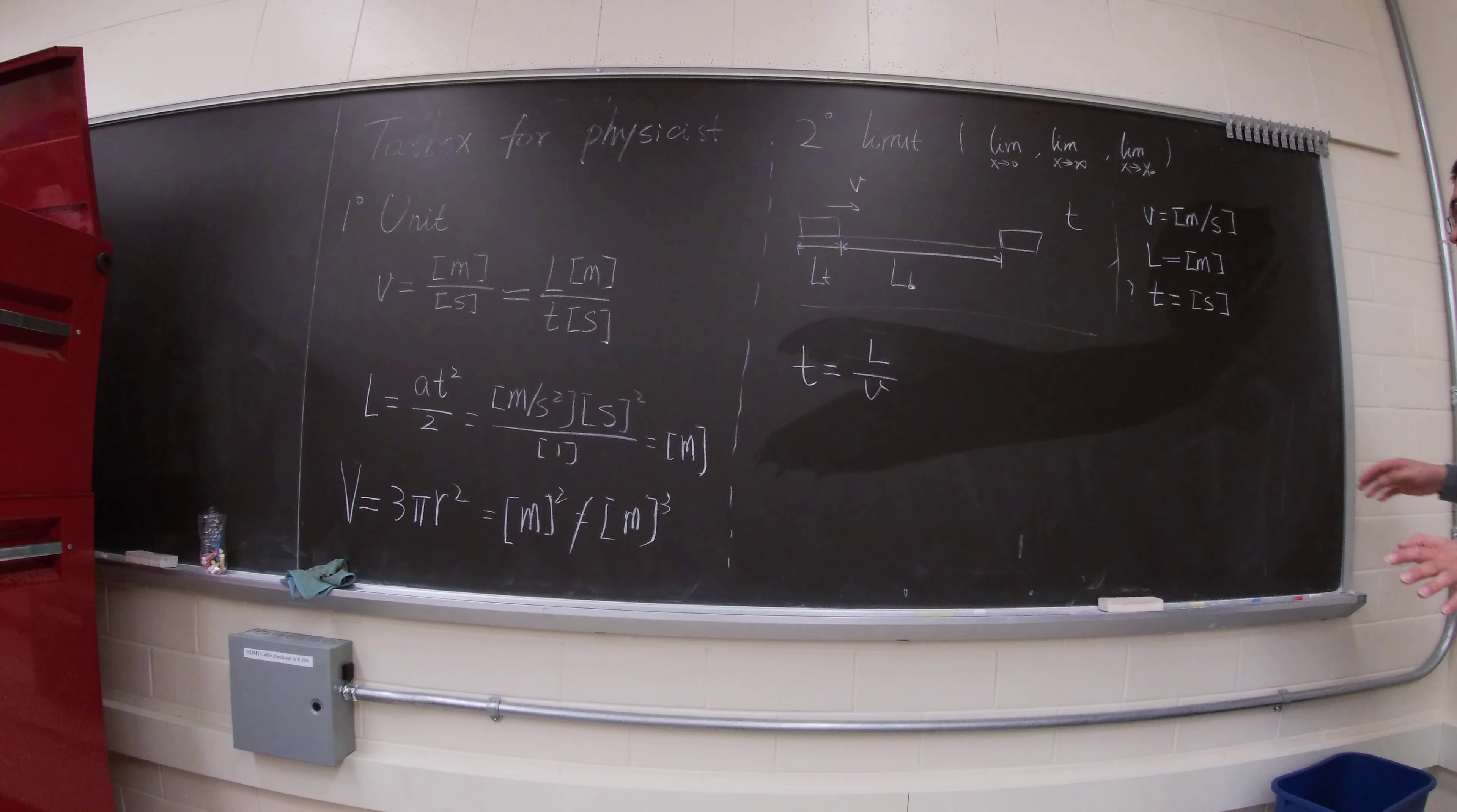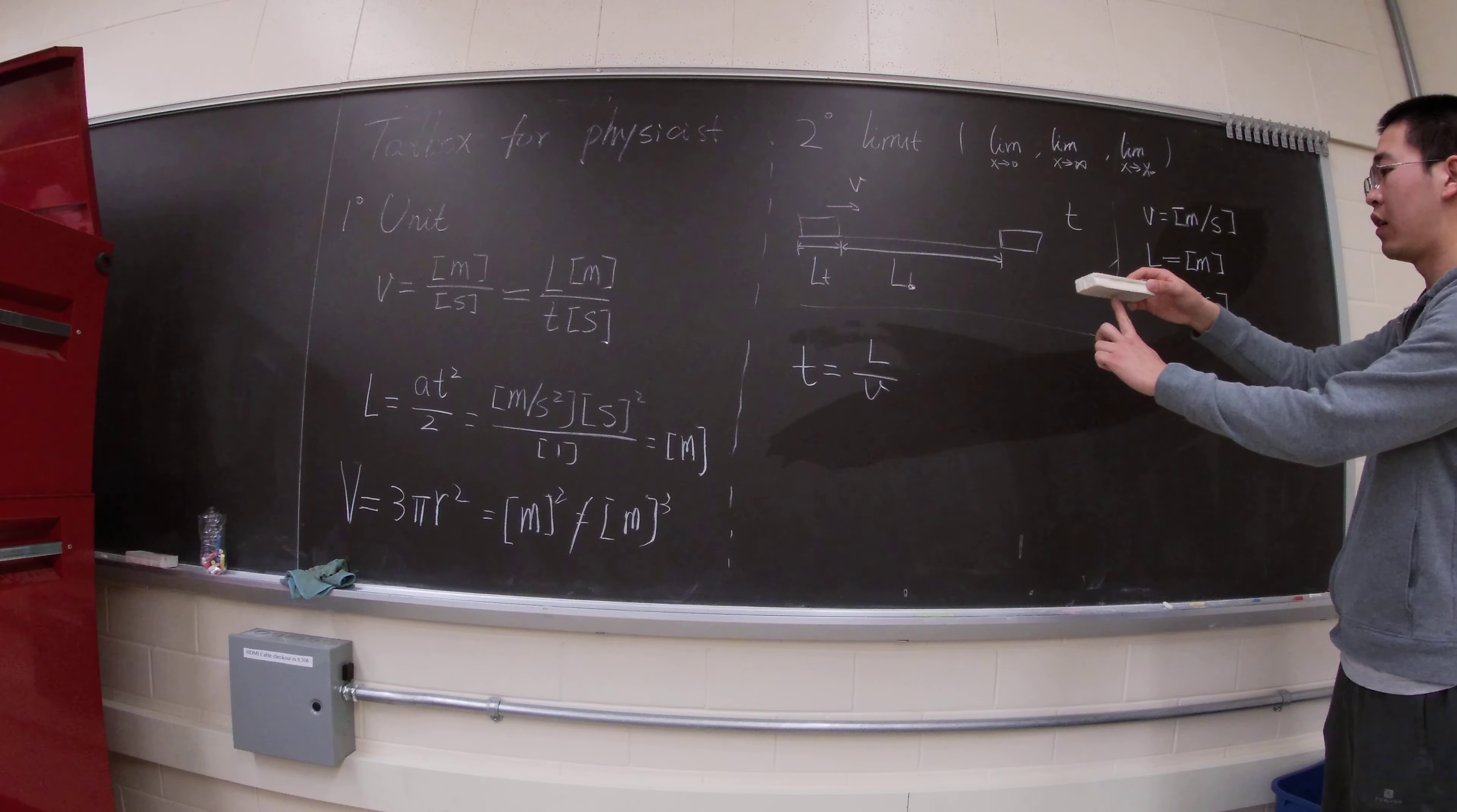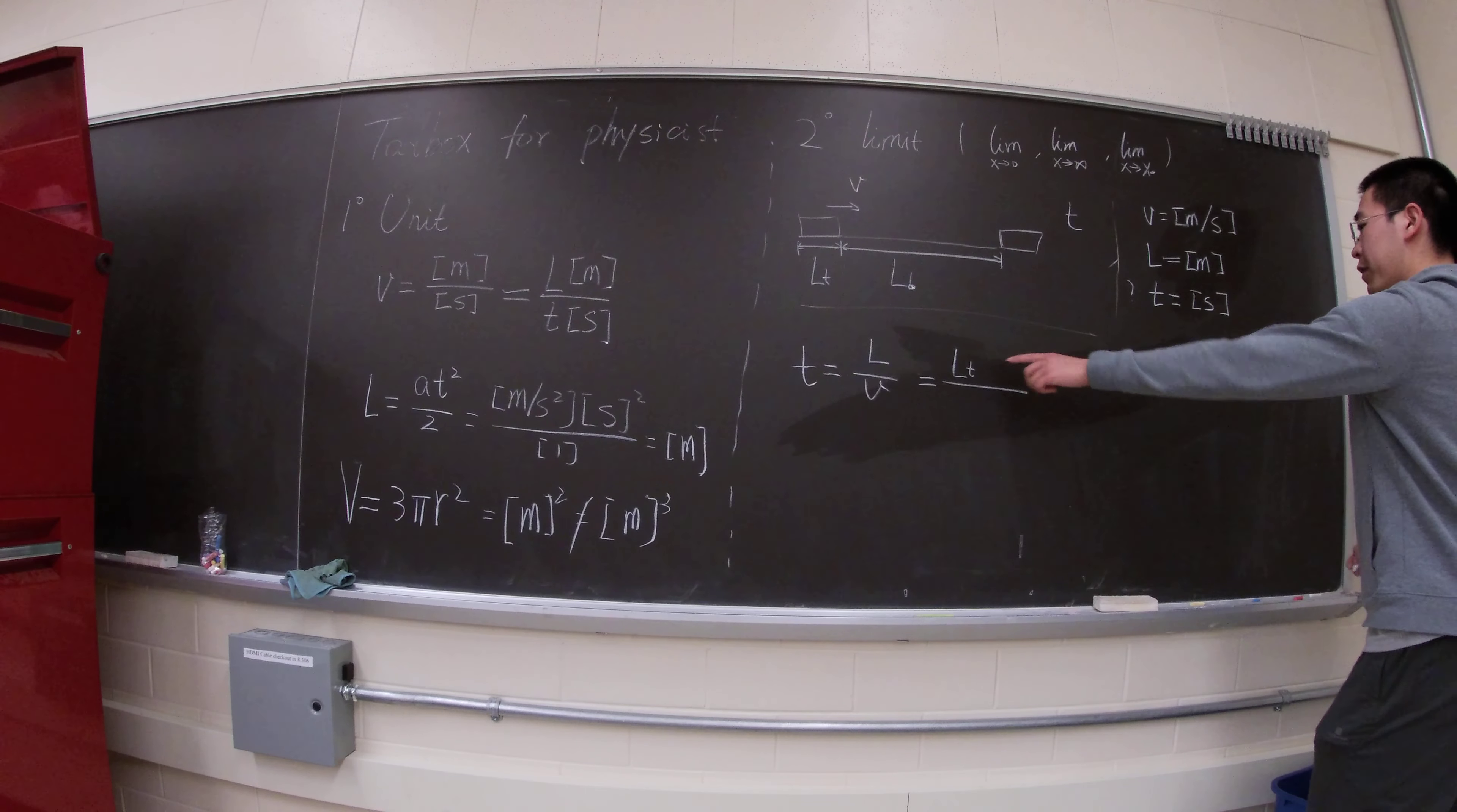So if we make the length of the bridge go to zero, the car length matters, as you can tell. Because the time is not zero. Then it has to have a component of the train hanging around here. Then we know that we have to have this component.